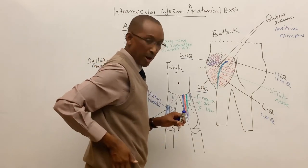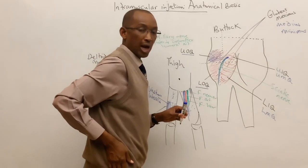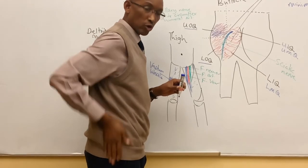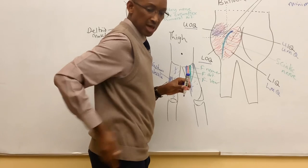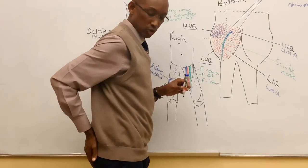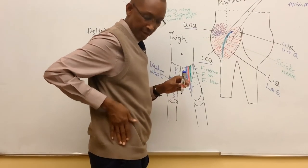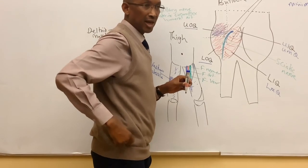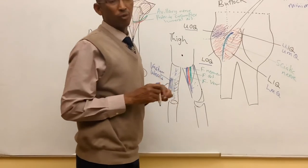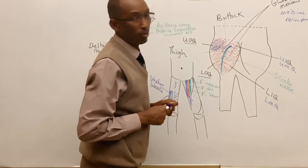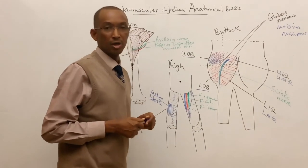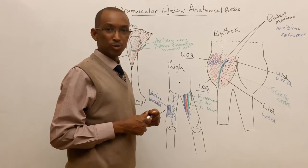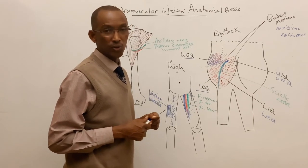The best option remains the upper outer quadrant — the upper lateral part of the gluteal region. This is on the lateral surface of the gluteal region, on the upper part, where you can safely give the injection while avoiding all neurovascular structures.